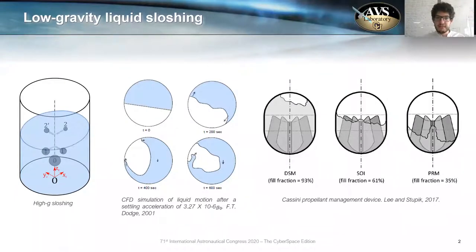We define sloshing as the movement of liquids in partially-filled tanks. Sloshing in high gravity does not suppose a big problem from the theoretical perspective because you have the strong restoring force of gravity. However, in low-gravity environments, sloshing becomes highly stochastic and complicates the design of propellant tanks and the attitude control system of our spacecraft.